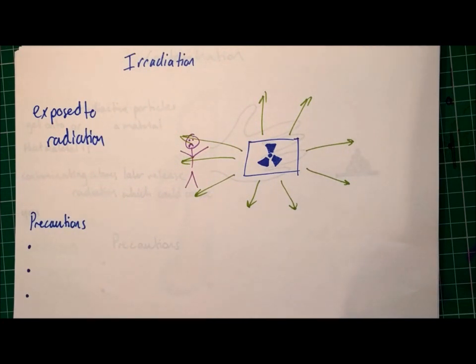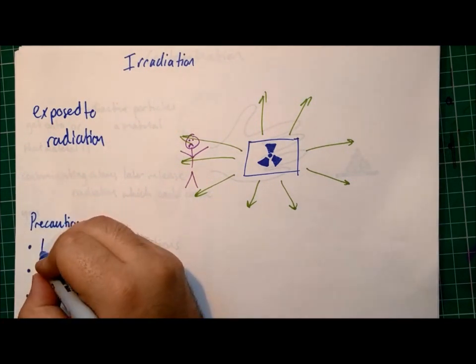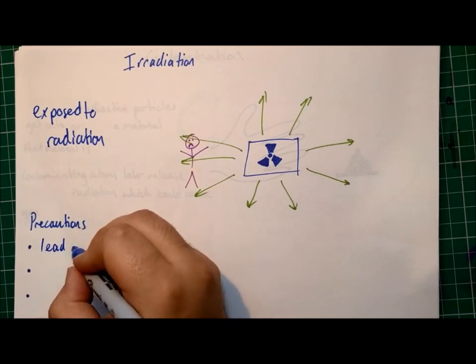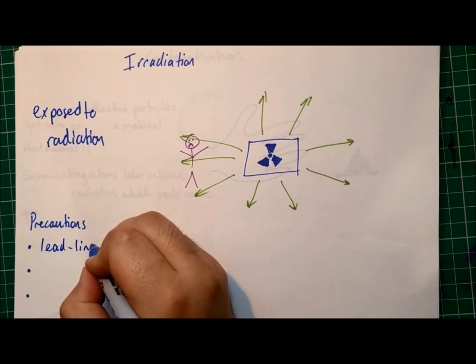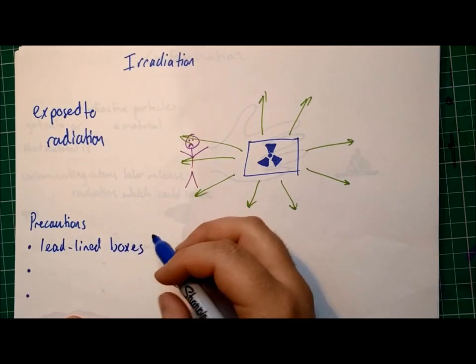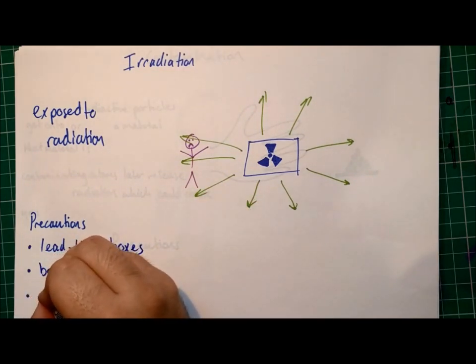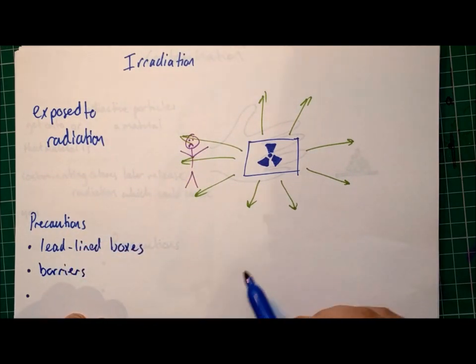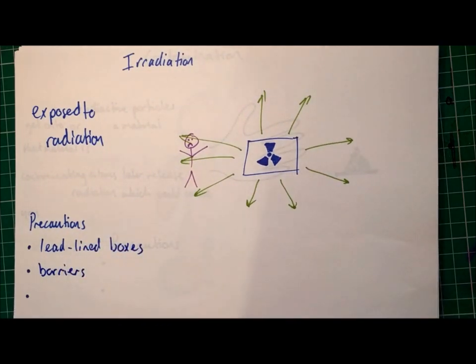There are three main precautions for this. One is the use of lead-lined boxes to store radioisotopes in. Another would be using barriers that people can stand behind either whilst working with radioactive sources or being near them.